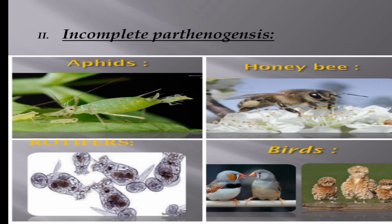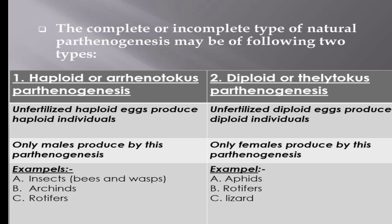Another example of incomplete parthenogenesis is birds, where all chicks produced from unfertilized eggs are males and may be fertilized as adults. The complete or incomplete type of natural parthenogenesis may be of two further types: haploid or arrhenotoky parthenogenesis, and diploid or thelytoky parthenogenesis.